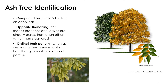How do I identify an ash tree? Ash trees have compound leaves with five to nine leaflets on each leaf with opposite branching. This means the branches and leaves are directly across from each other rather than staggered. This method can be used in the wintertime when leaves are not present.